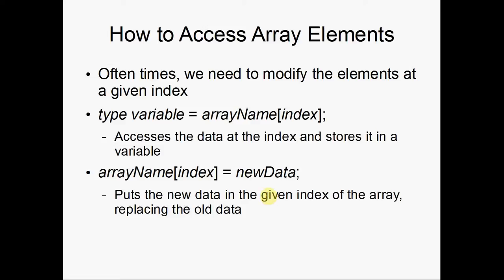Often times you want to access elements of the array. To do this, let's say we want to store it somewhere — we have the type, variable name, equals the array name, and then inside the square braces the index. An important thing to note is that arrays start indexing from 0. So if we have an array with three spots — A, B, and C — A is going to have an index of 0, B an index of 1, and C an index of 2.